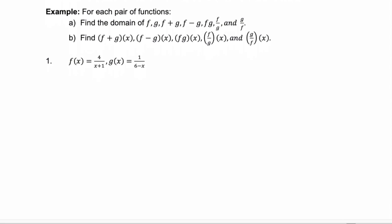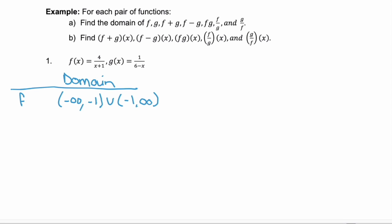For this example, we're going to find the domain of all these different functions and pairs of functions — let's make a table. First, the domain of f: it's a fraction, and the only value for x that wouldn't be valid is one that makes the denominator zero, which is negative one. So the domain is anything but negative one. For function g, similarly it's a fraction, and the value that makes the denominator zero is x equals six. So its domain excludes six: negative infinity to six, or six to infinity.